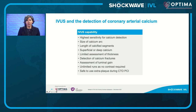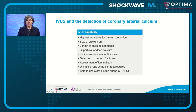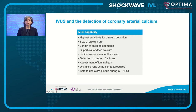In conclusion, IVUS has the highest sensitivity for calcium detection compared to OCT and angiography. It allows measurement of calcium arc and length, qualitative assessment of superficial versus deep calcium, and a limited assessment of thickness using smooth or irregular surface with or without reverberation. Calcium fracture can usually be detected, and if not, the effect of the modification device can be assessed by luminal gain. A major advantage of IVUS is that no contrast is used, so you can do unlimited runs, and it is safe to use extraplaque during CTO PCI.